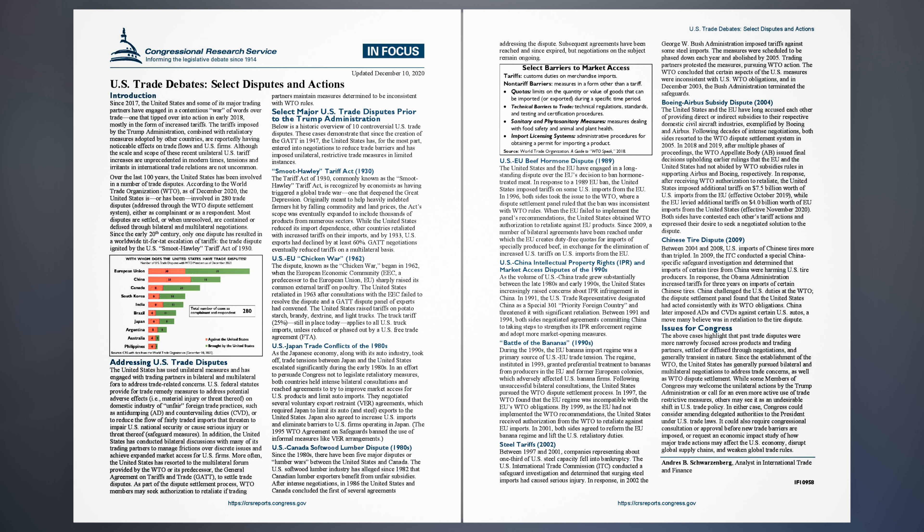U.S.-China intellectual property rights (IPR) and market access disputes of the 1990s: As the volume of U.S.-China trade grew substantially between the late 1980s and early 1990s, the United States increasingly raised concerns about IPR infringement in China. In 1991, the U.S. Trade Representative designated China as a Special 301 priority foreign country and threatened it with significant retaliation. Between 1991 and 1994, both sides negotiated agreements committing China to taking steps to strengthen its IPR enforcement regime and adopt more market-opening measures.